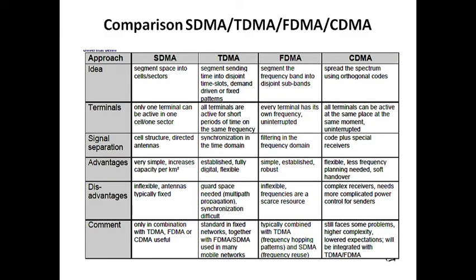Now we will look at the comparison of all four schemes: SDMA, TDMA, FDMA, and CDMA — Space Division Multiple Access, Frequency Division Multiple Access, Time Division Multiple Access, and Code Division Multiple Access. TDMA has many more sub-schemes under it. Starting with the idea: SDMA segments its space into cells and sectors, giving separate space to each mobile station. TDMA segments sending time into disjoint time slots — demand-driven or fixed patterns — and transmits data based on time.